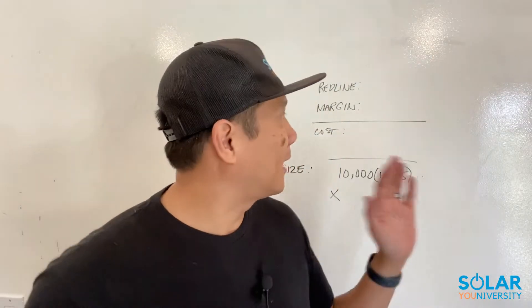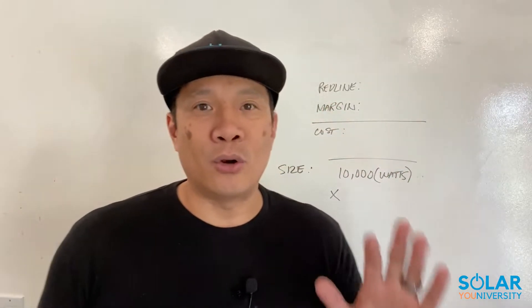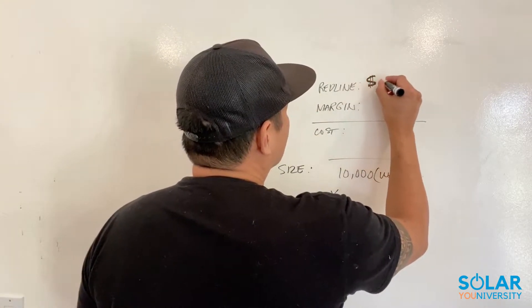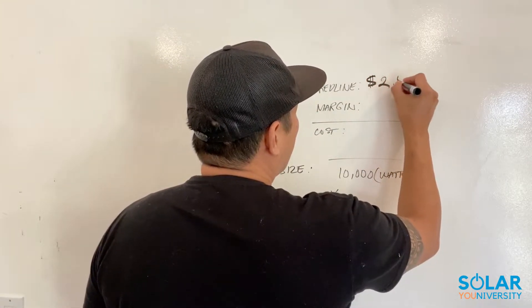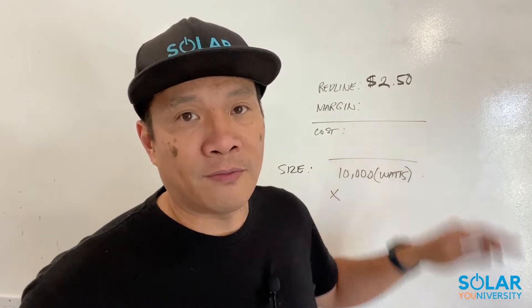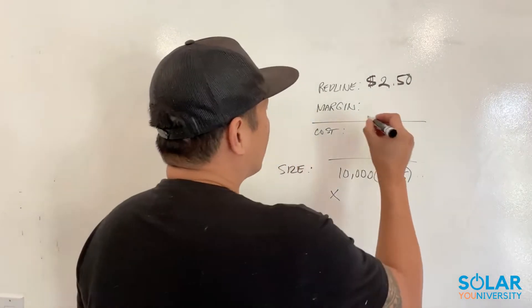So I want to show you how to calculate your solar commissions, and again this is based on a red line compensation structure. A red line is your baseline — your starting point. For example, if the red line you got from a solar company is $2.50 per watt, that means any price above $2.50 is your profit margin.